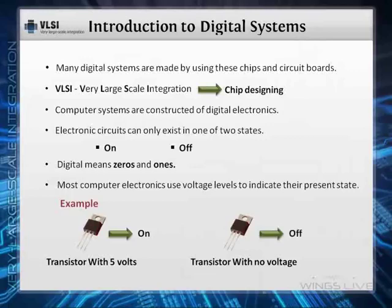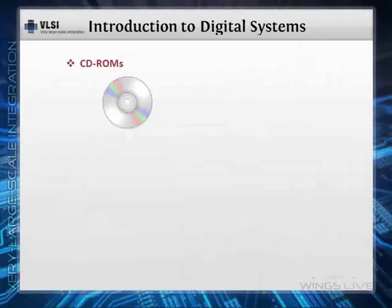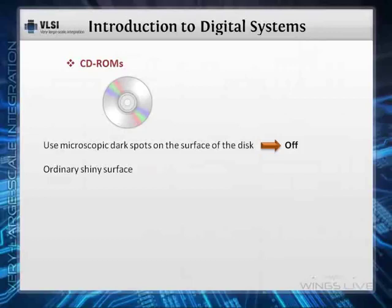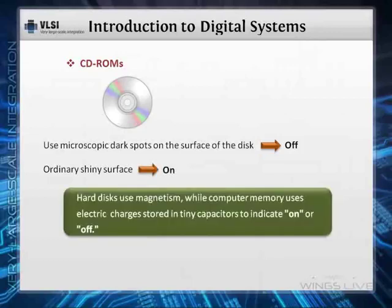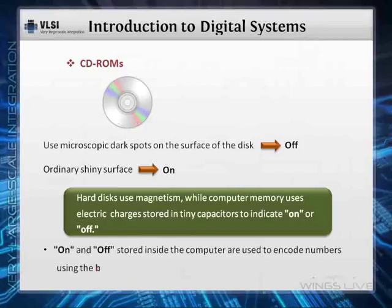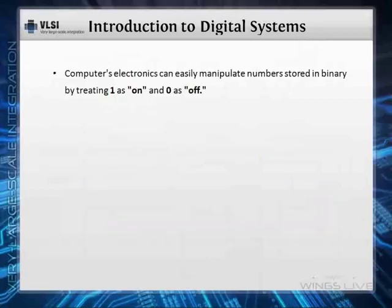Not only computer hardware uses voltage. CD-ROMs, for example, use microscopic dark spots on the surface of the disk to indicate off, while the ordinary shiny surface is considered on. Hard disks use magnetism, while computer memory uses electric charges stored in tiny capacitors to indicate on or off. These patterns of on and off stored inside the computer are used to encode numbers using the binary number system. A computer's electronics can easily manipulate numbers stored in binary by treating one as on and zero as off.